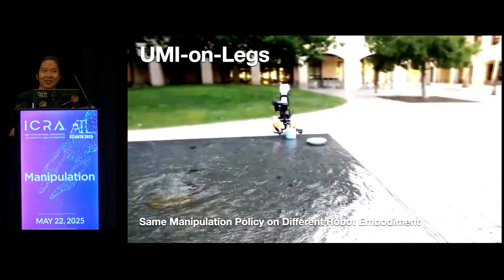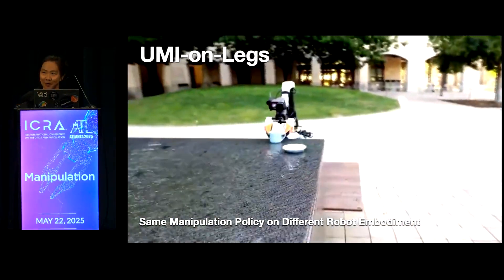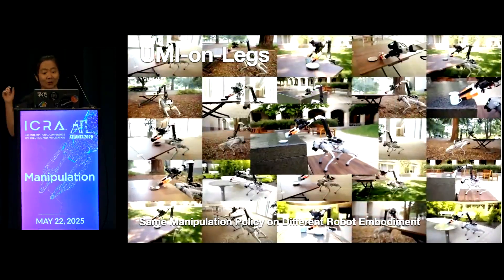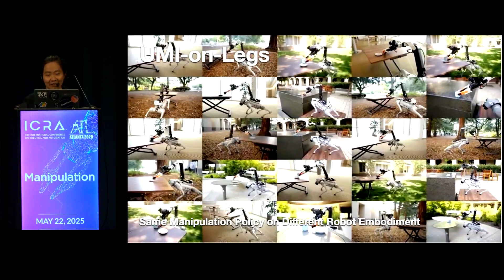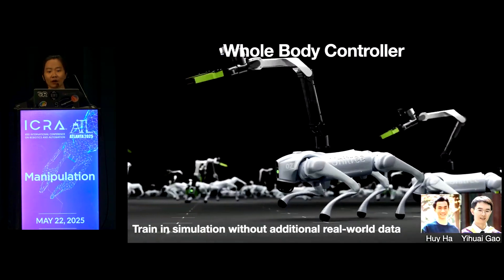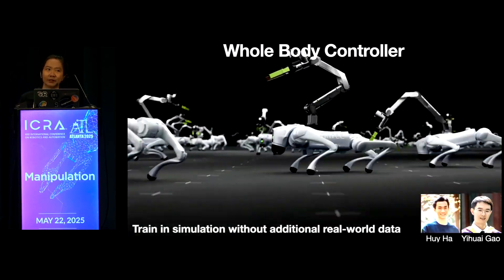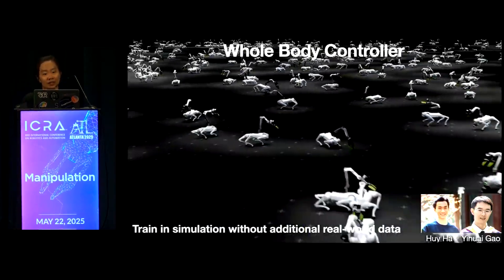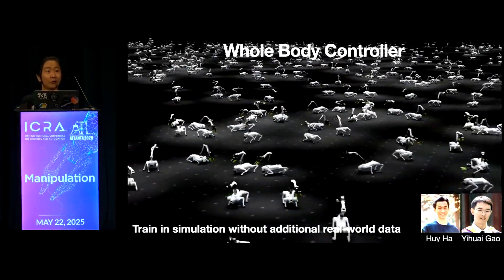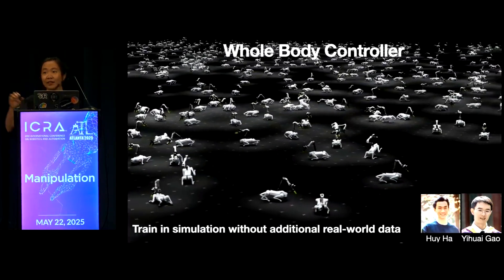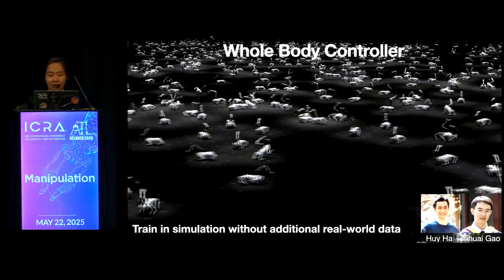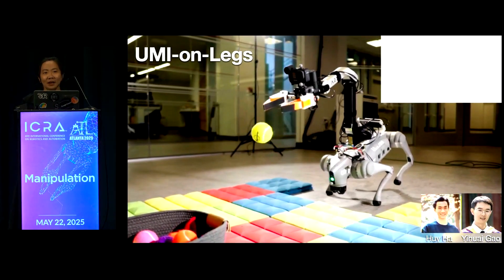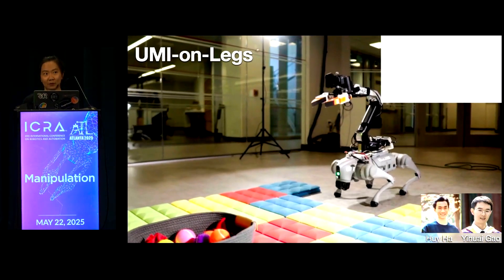Even better, you can test the exact same manipulation policy on a very different robot embodiment — in this case a quadruped robot dog. To do that, all you need is to train a whole-body controller for this particular robot, and this step can be done entirely in simulation without any additional real-world training data from humans. With that whole-body controller, you can enable very complex tasks like tossing objects, still using just UMI demonstration data.